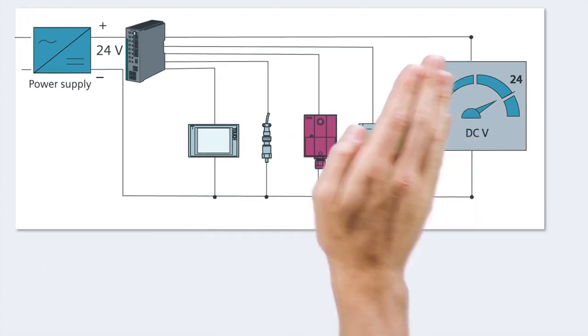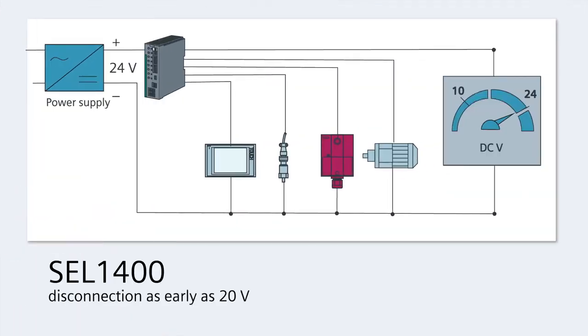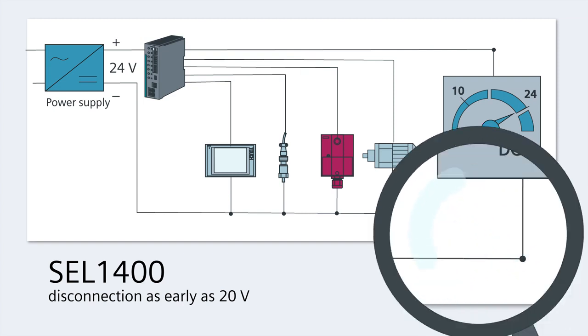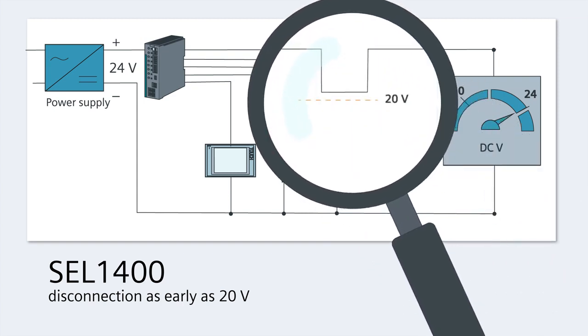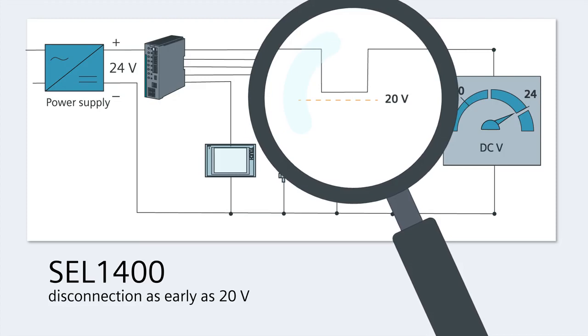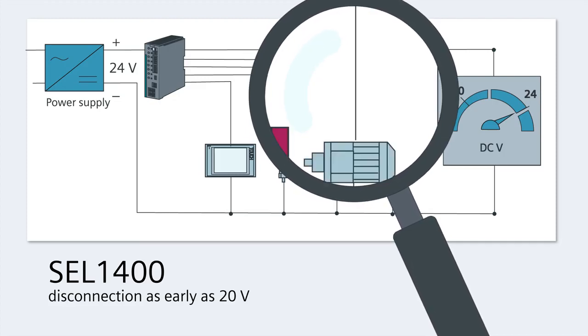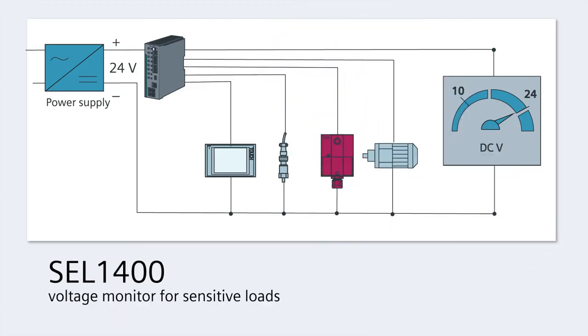An alternative is the SEL1400 with its limiting characteristic that immediately disconnects the relevant output if the voltage dips below 20 volts. The SEL1400 also features voltage monitoring, which can be especially beneficial for loads that don't conform to the PLC standard.